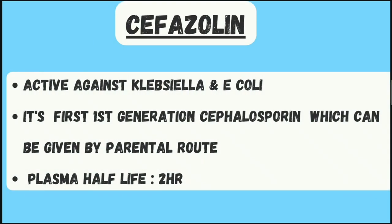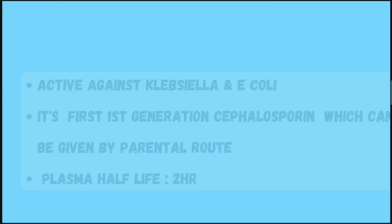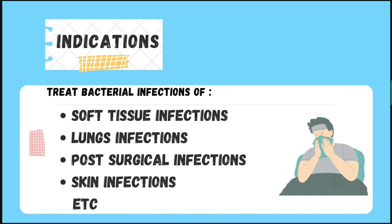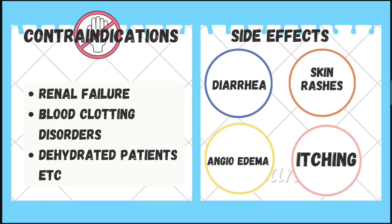Now we will move to cephradine. Cephradine is active against Klebsiella and E. coli. It is the first first-generation cephalosporin which can be given by the parenteral route — that means intravenous. Plasma half-life is two hours. It is indicated in soft tissue infections, lung infections such as pneumonia, post-surgical infections, and skin infections.